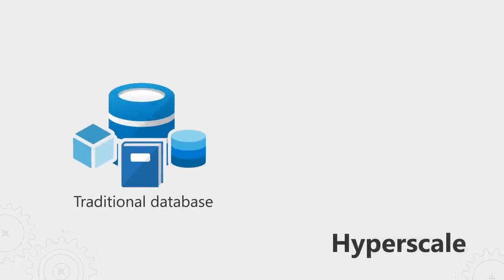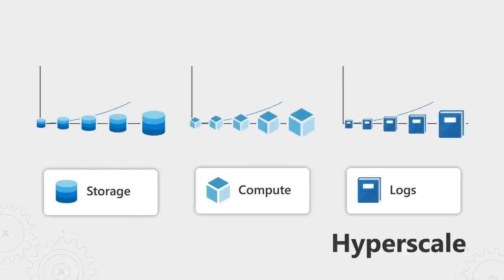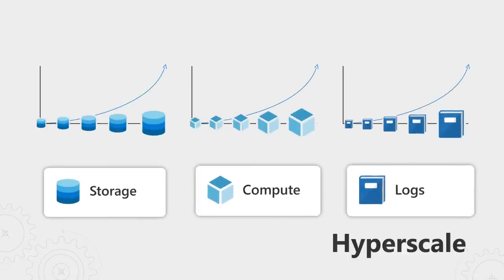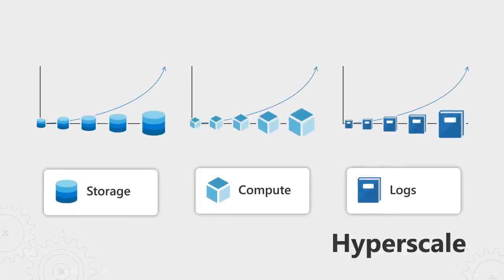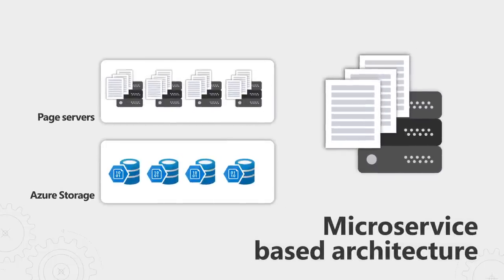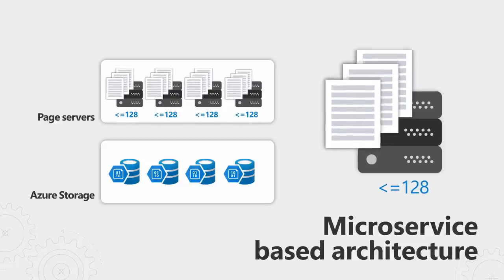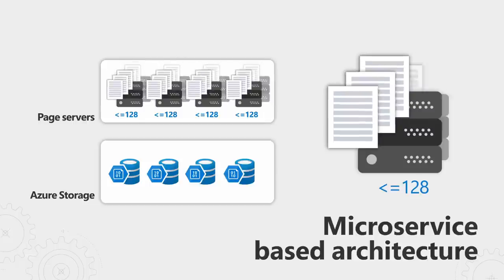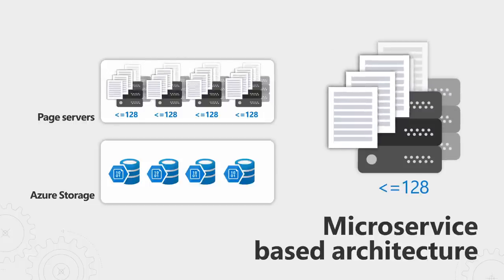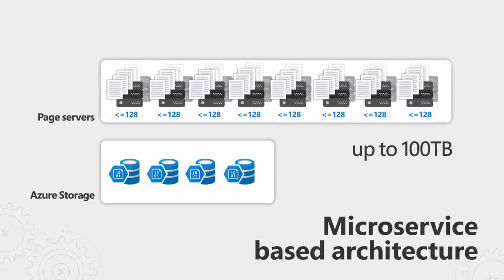So how is this actually built? Unlike traditional databases, Hyperscale decouples the storage from the compute and the log engines. These components work and scale independently and then work together. The storage engine is built on a microservices architecture that can scale out horizontally as needed. It consists of page servers — each page server manages 128 gigabytes worth of data pages, and each page server has a secondary for resiliency. When your application requires even more storage, we just add more page servers to the configuration, all the way up to 100 terabytes or more someday.